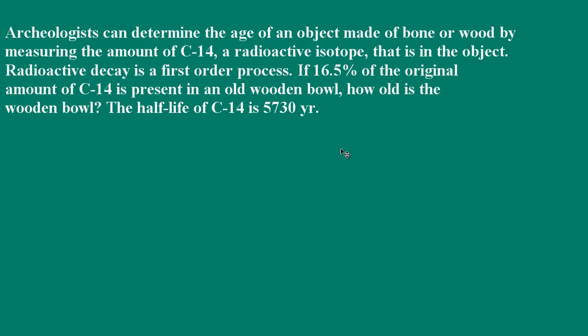So we know that we have first-order, so the first thing we need to do is determine our rate constant k. So for a first-order process, the half-life is equal to the natural log of 2 divided by k.